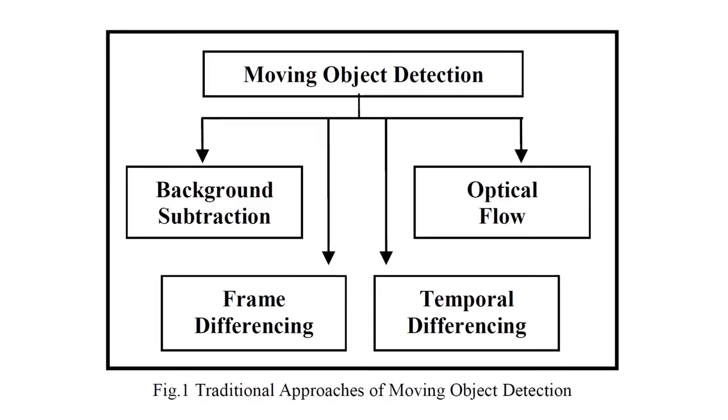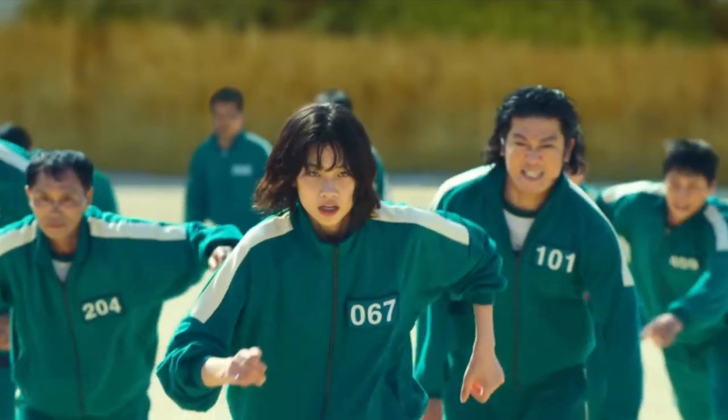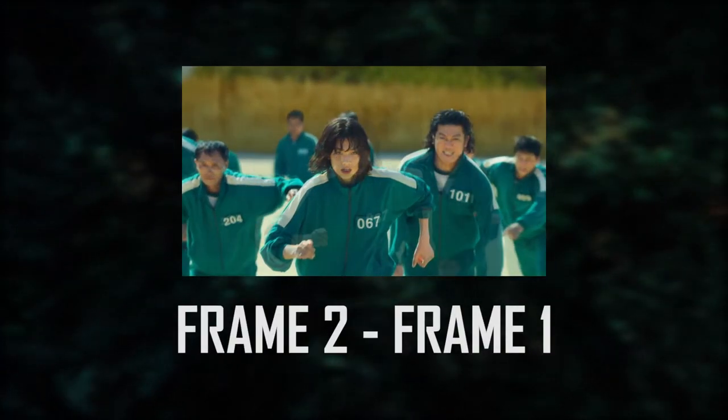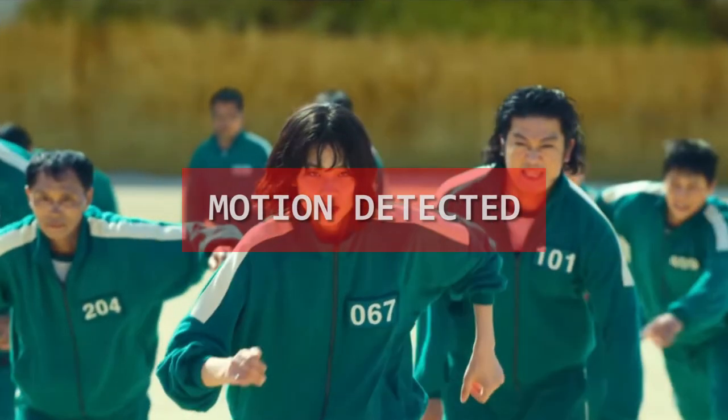So far, we've talked about how to detect and recognize an object or player in a frame. However, motion detection requires more than just a frame — it requires multiple frames to see who is moving, which is why video cameras are used. Although moving object detection can be categorized into four approaches, the basic idea is to measure the difference between two frames, and if the difference is larger than what the game designer wants, a motion will be detected.